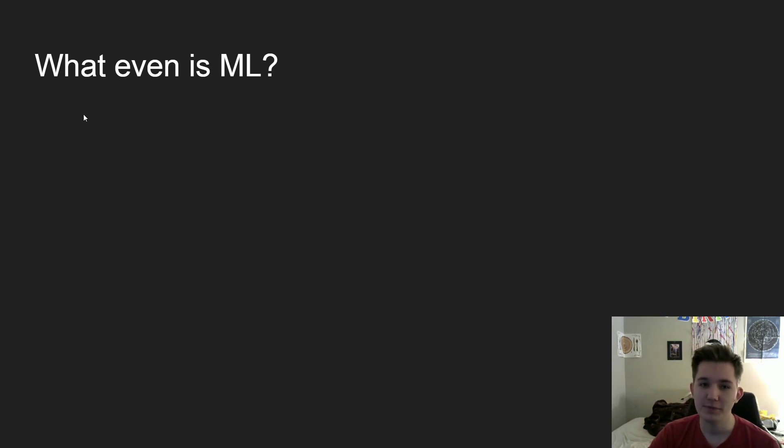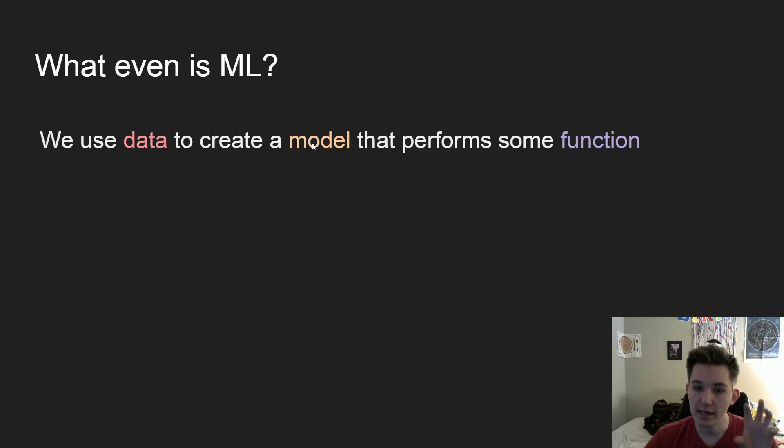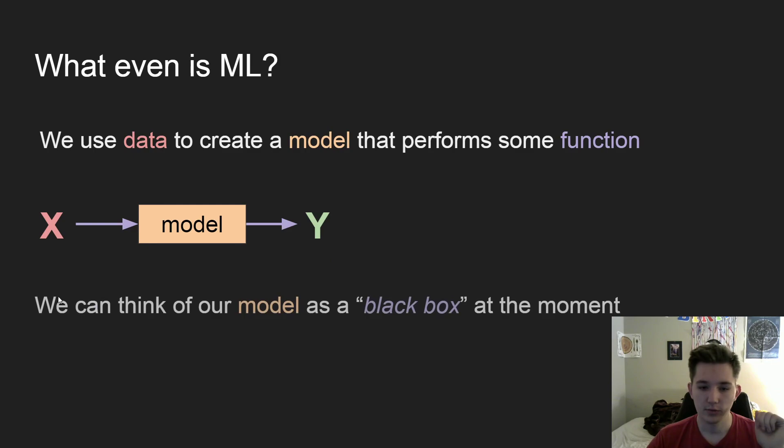So let's talk more specifically about what it actually is. So ML, in general, is using data to create a model that will perform some sort of function. So we can think of taking some input, which we have as our data, being put into our model, and our output will give us some value from our model.